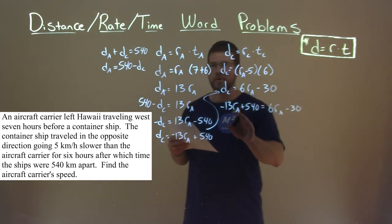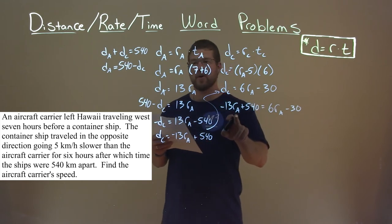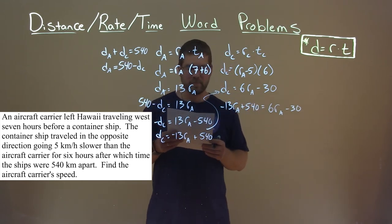And now we have the equation here where we just have our variable R sub A that we need to find, the rate of the aircraft carrier.